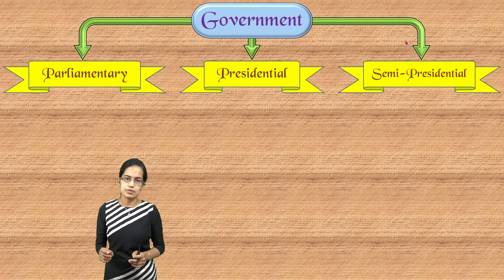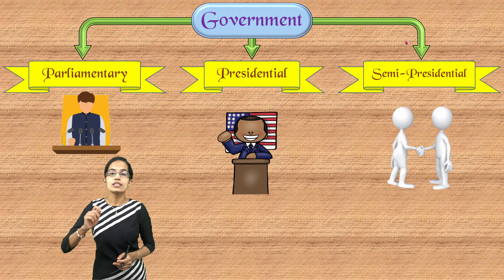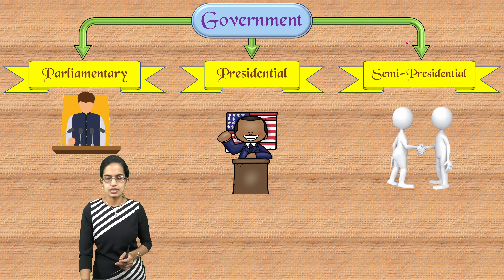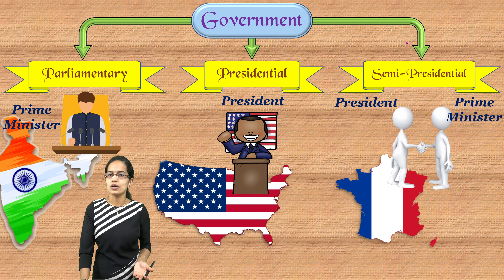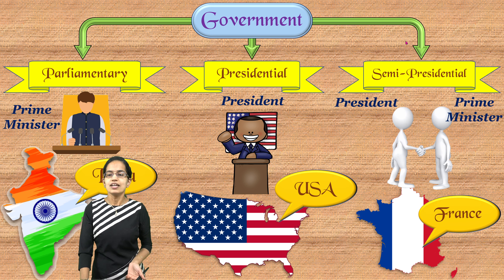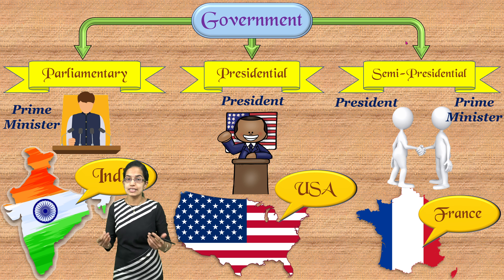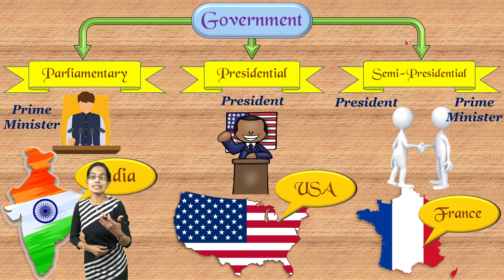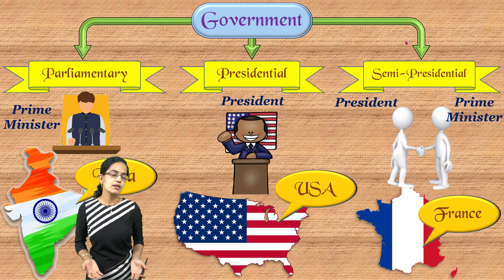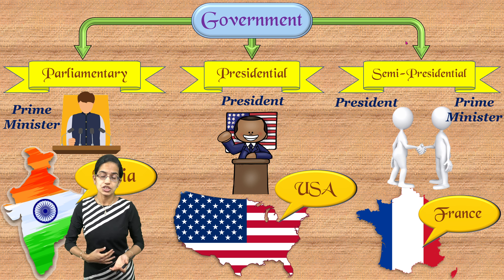The first is the parliamentary form of government, which has parliament or the prime minister in the parliament as the head. A common example of a parliamentary form of government is India. Then we have the presidential form of government, where the president is the head and is directly elected. Good examples are the United States, Mexico, and Nigeria.